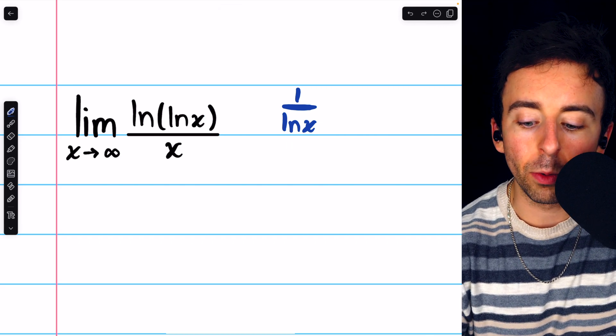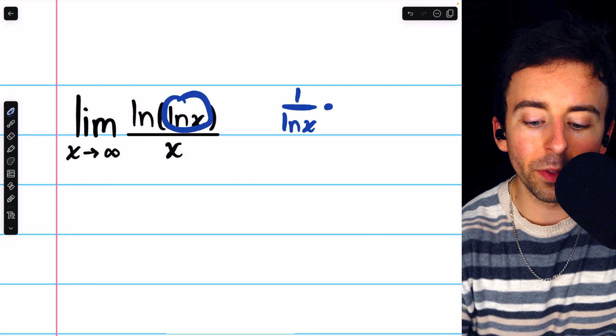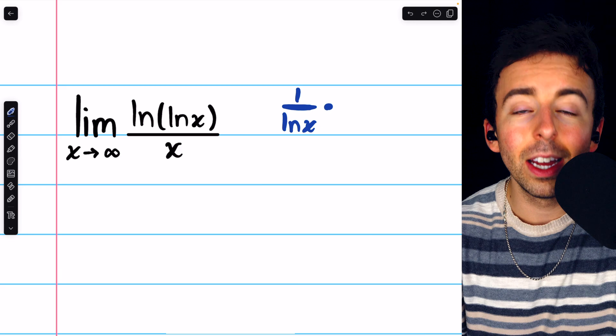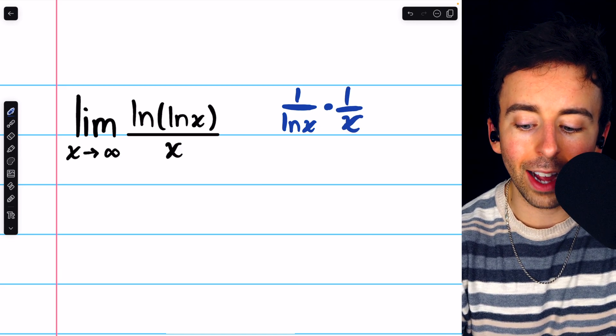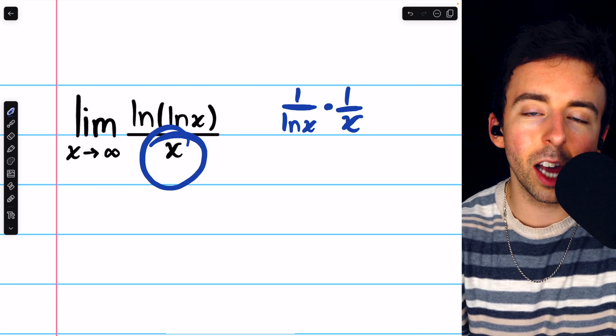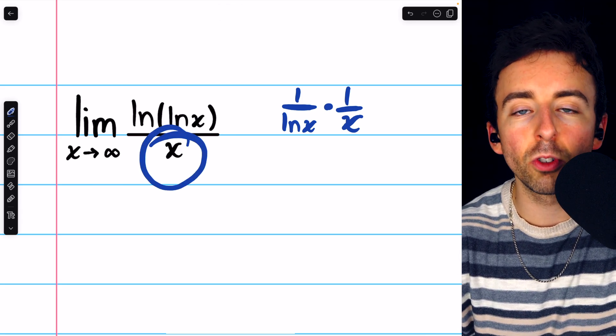The only other part of the chain rule is that we have to multiply by the derivative of that inside function, that input which we didn't change. The derivative of lnx is 1 over x. So, that's the derivative of the numerator, and the derivative of the denominator, x, of course, is just 1.